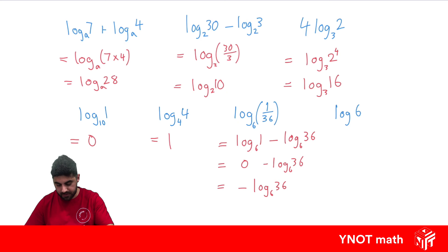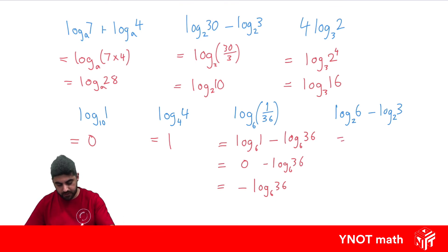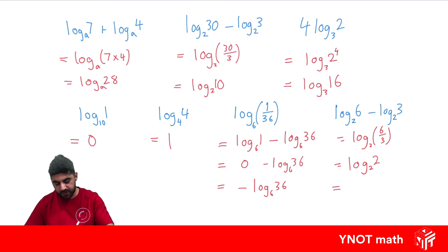What about log 6 base 2 minus log 3 base 2? The difference of logs is the log of a quotient. So we're going to get log of 6 over 3, base 2. And 6 divided by 3 is 2, giving us log 2 base 2, and the log of a number with the same base gives us 1.